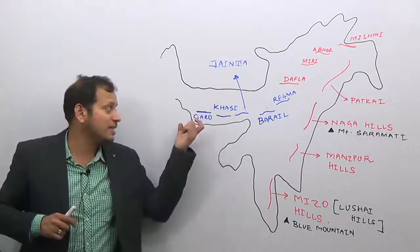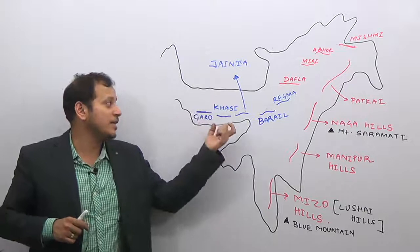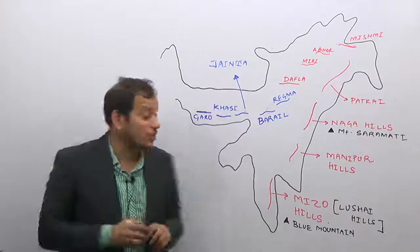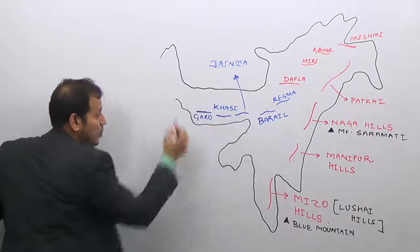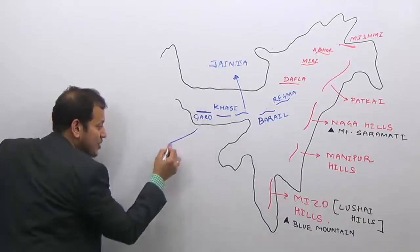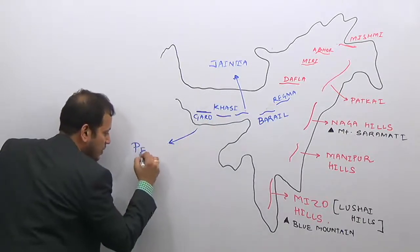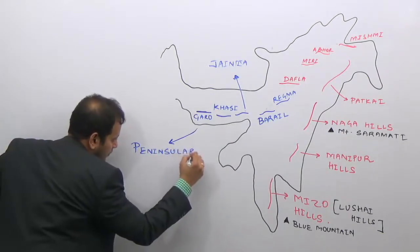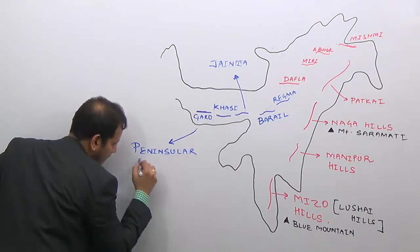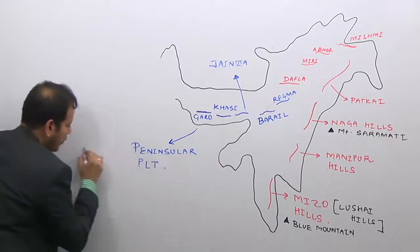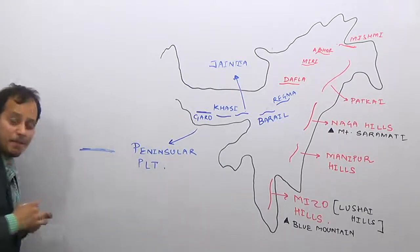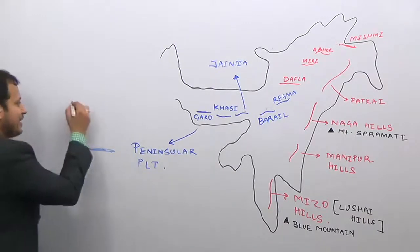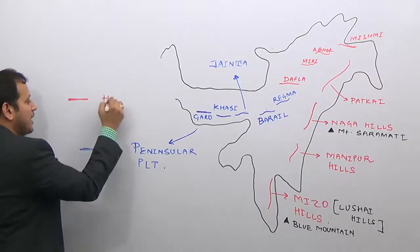This blue color — that is, Garo, Khasi, Jaintia, Barel, and Rengma — is drawn in blue because they are an extension of the Peninsular Plateau region. While the red color represents the part of the Himalayan ranges.